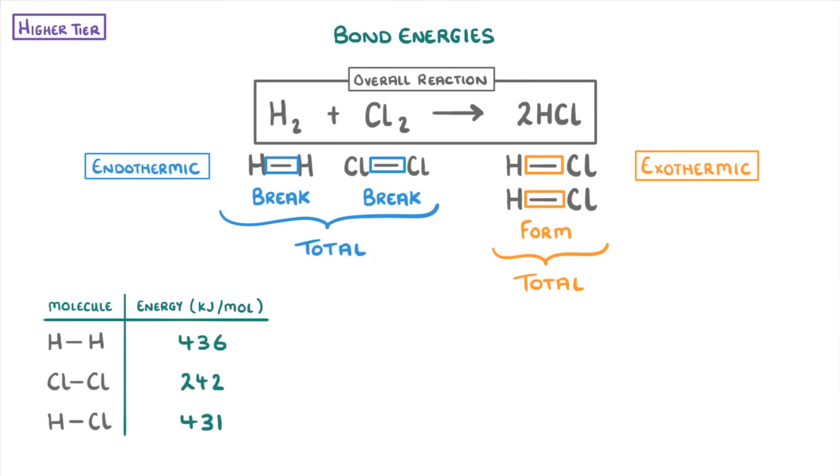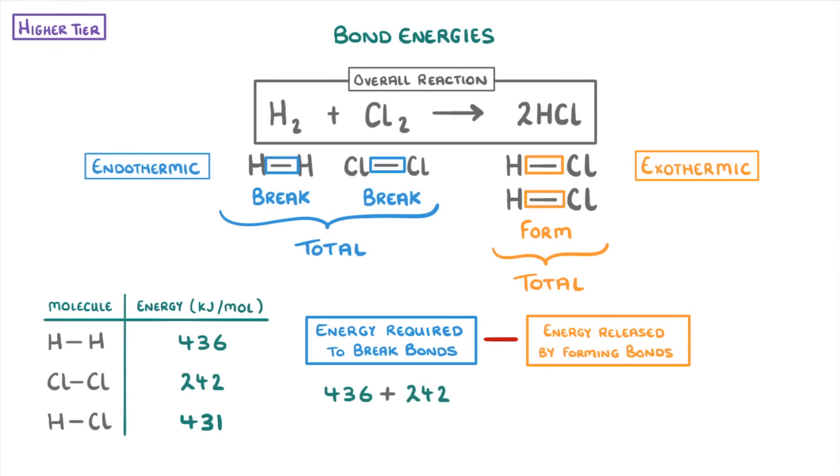And to work out the overall energy change, we just do the energy required to break bonds minus the energy released by forming bonds, which in our case would be 436 for the hydrogen-hydrogen bond, plus 242 for the chlorine-chlorine bond, minus 2 times 431 for the bonds within the two hydrogen-chloride molecules, which simplifies to 678 minus 862, or negative 184 kilojoules per mole.